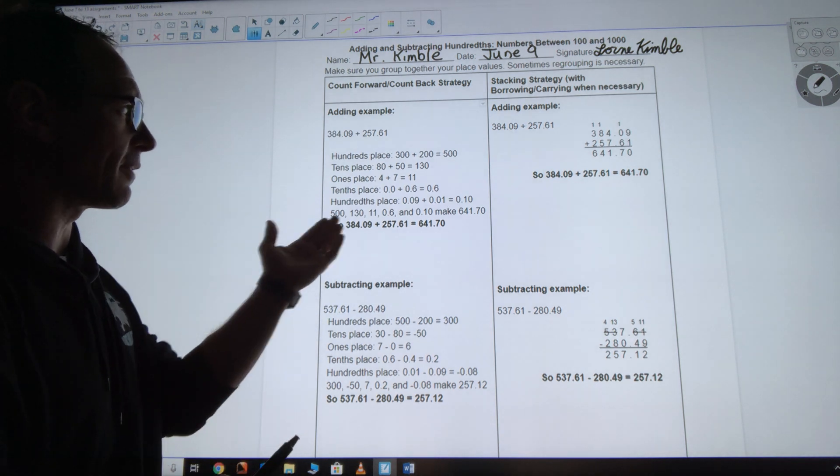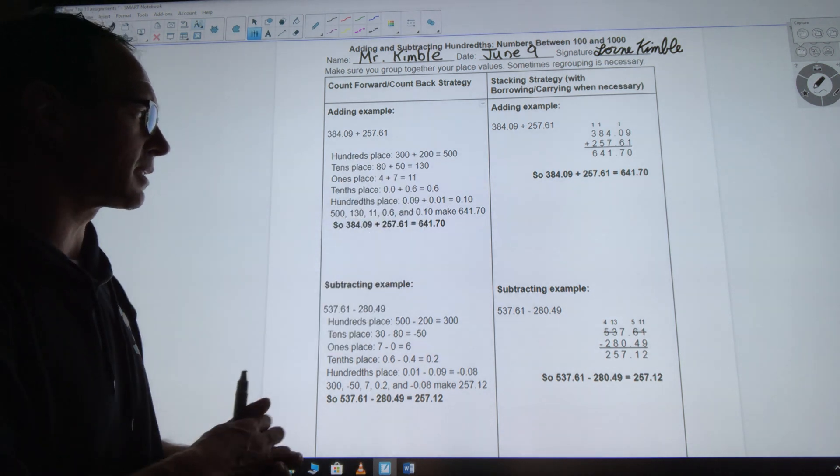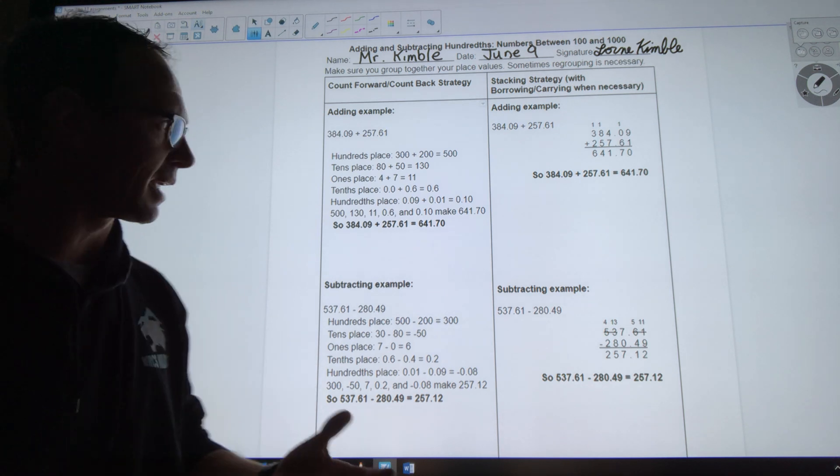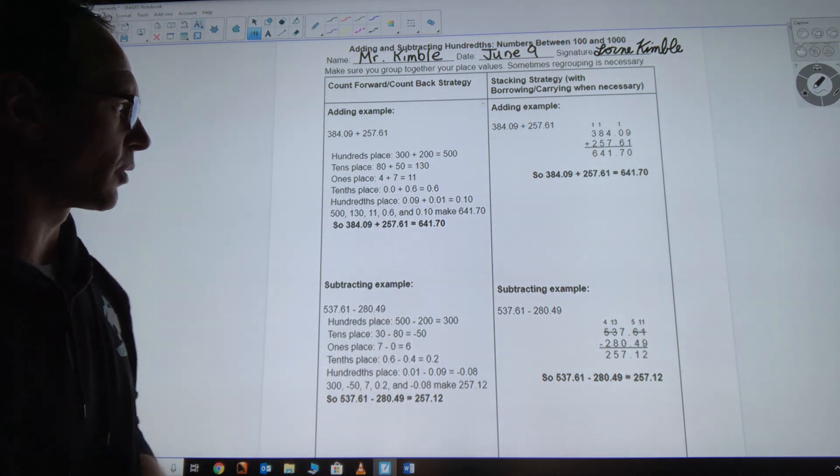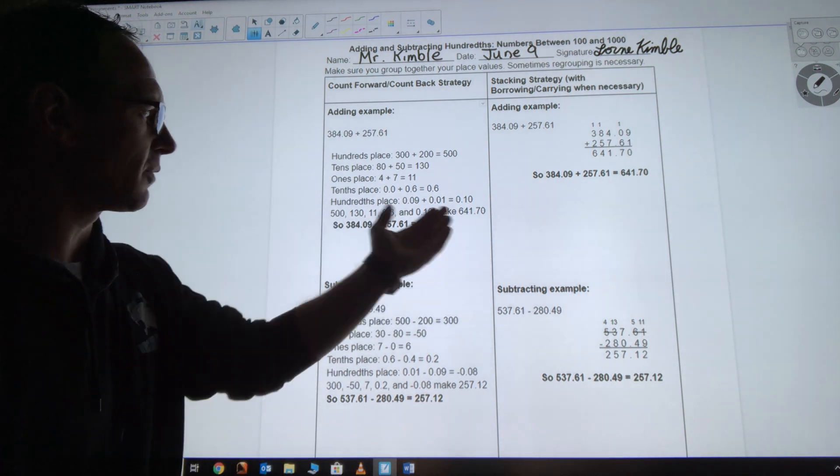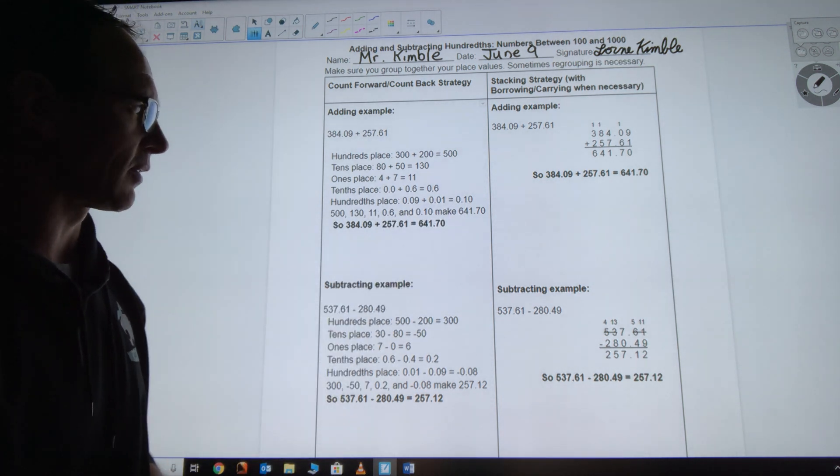We take what we have for each of those places and then put together. So in this case, it's 500, 130, 11, 0.6 and 0.10, which would give me 641.70.